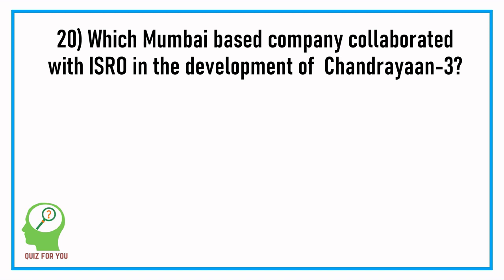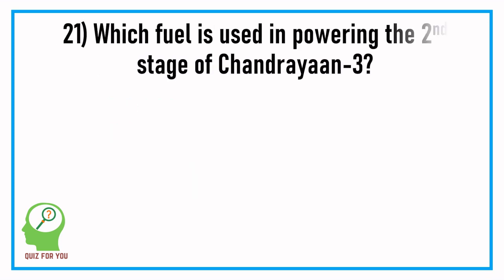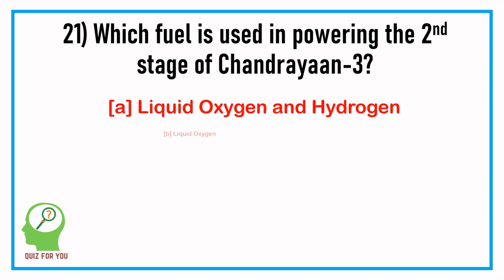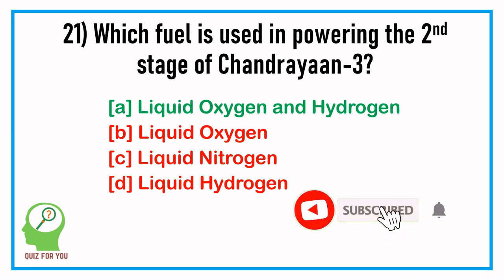Question number twenty: which Mumbai-based company collaborated with ISRO in the development of Chandrayaan-3? Answer: Godrej Aerospace. Question number twenty-one: which fuel is used in powering the second stage of Chandrayaan-3? Answer: liquid oxygen and hydrogen.